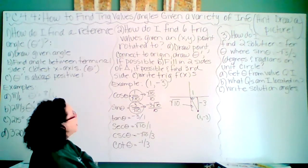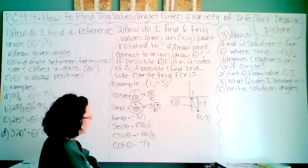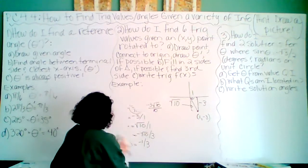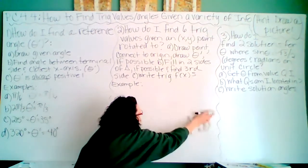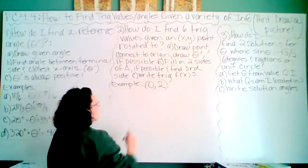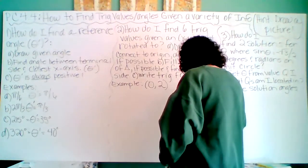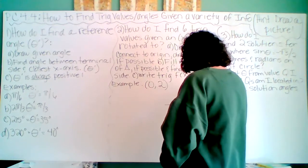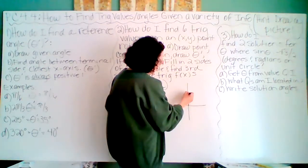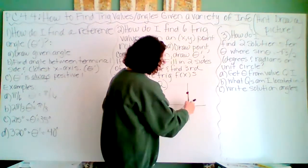Now another example: what if they ask the same question but you cannot draw a triangle? Here's what I mean. Let's say they give you the point (0, 2) and they want the trig functions. When you draw it, you are located right here on the y-axis. Notice when I draw a line to the origin, you can't make a triangle because it wasn't on a slant where you can make a triangle. So how do I get the six trig functions at (0, 2)?